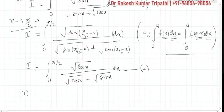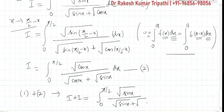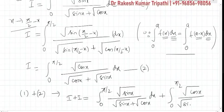(1) and (2) will imply I + I. Left-hand sides of both, I + I, is equal to 0 to π/2, √sin x upon √sin x + √cos x dx plus 0 to π/2, √cos x upon √sin x + √cos x dx.